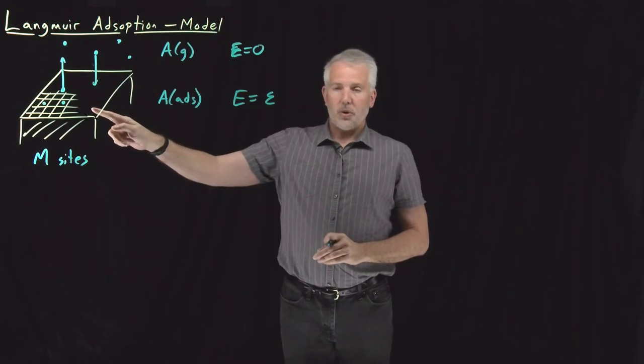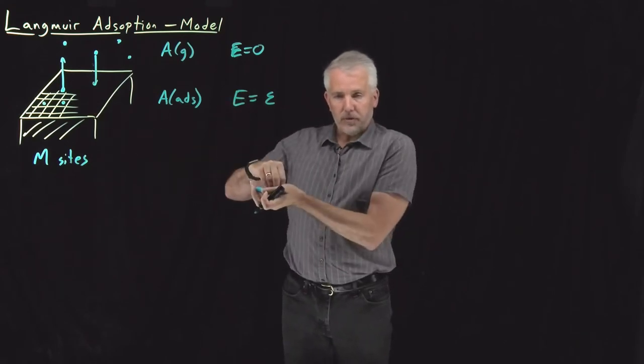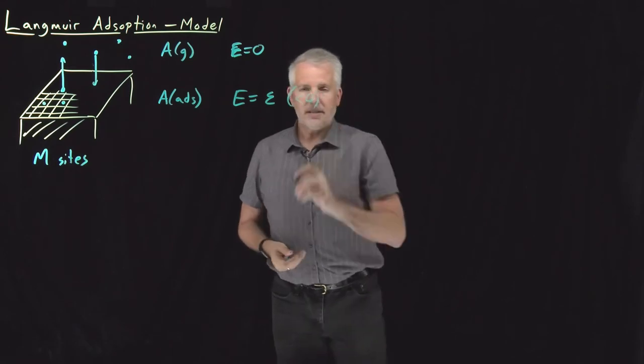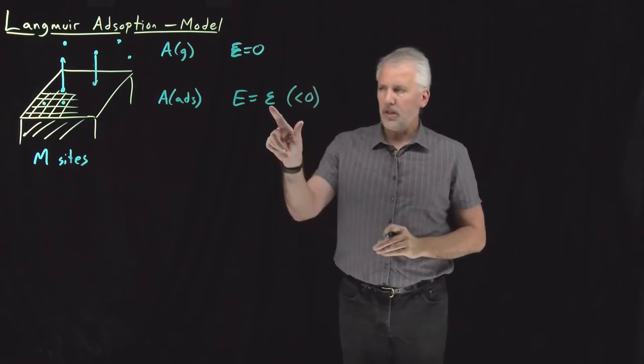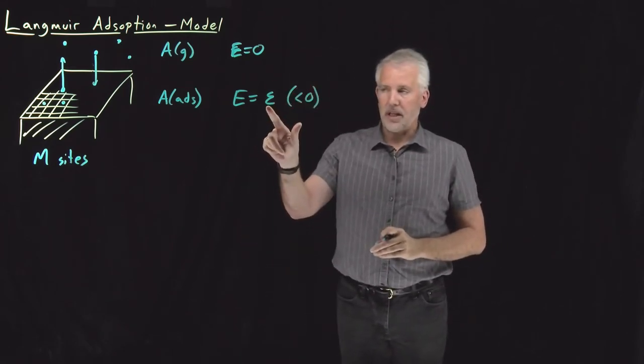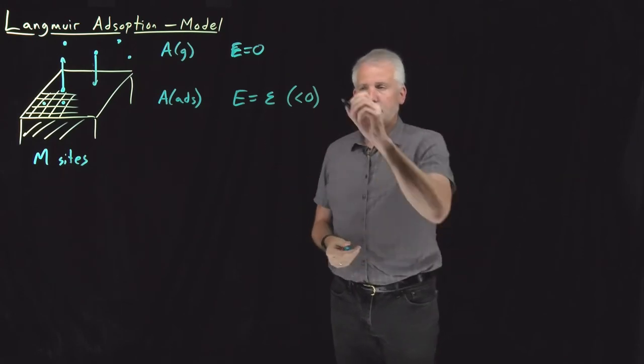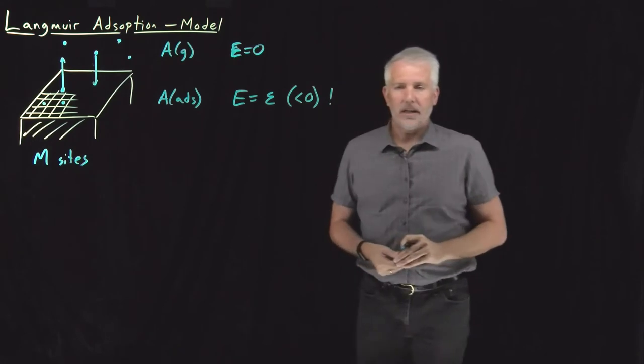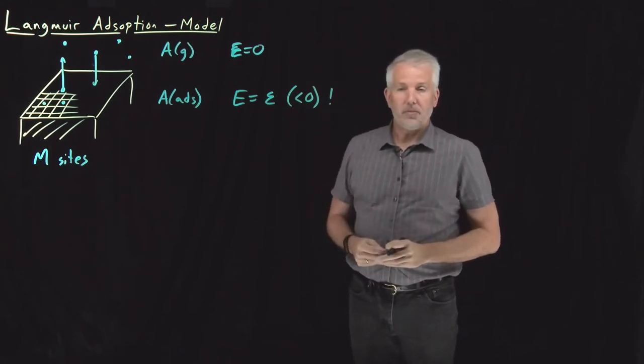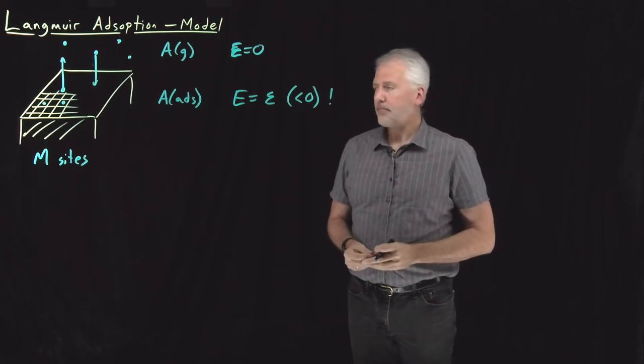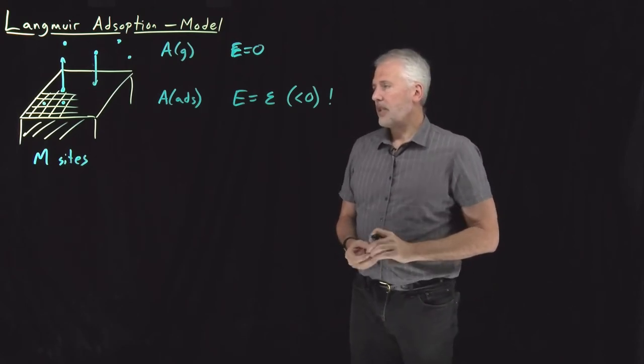This energy, if it's adsorbed to the surface, if it's interacting strongly enough with the surface to stick to it, that energy, epsilon is going to be a number less than zero. So I'll use epsilon as the label. Epsilon, the constant, is a value that's a negative number. So keep that in mind when we get to the point of plugging numbers into these problems. Remember that epsilon is going to be a negative number.